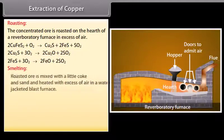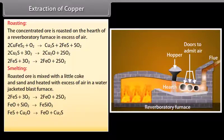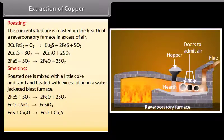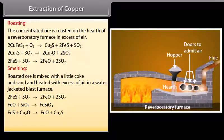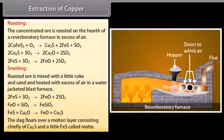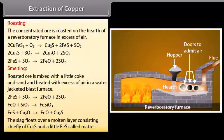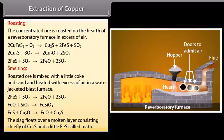Smelting. Roasted ore is mixed with a little coke and sand and heated with excess of air in a water-jacketed blast furnace. Most of the remaining iron sulfide is converted into oxide which reacts with silica forming fusible slag of iron silicate. The slag floats over a molten layer consisting chiefly of Cu2S and a little FeS called matte.